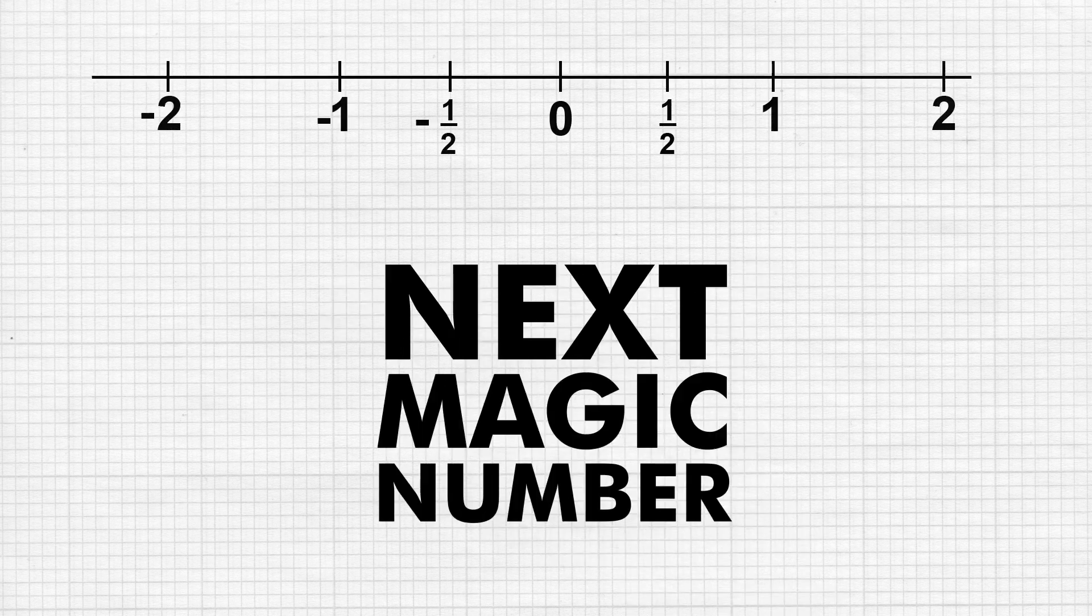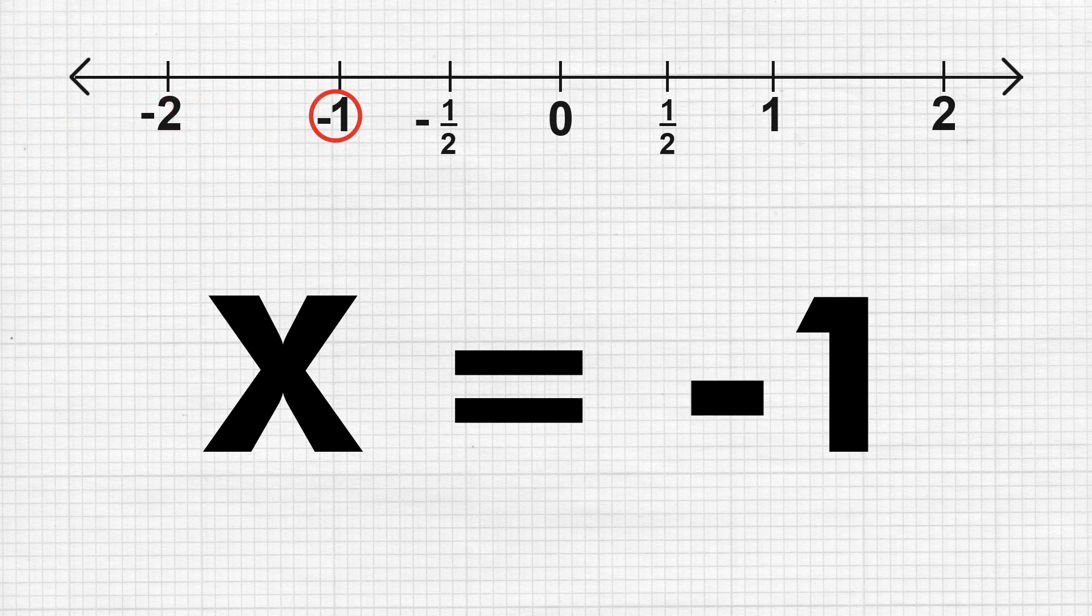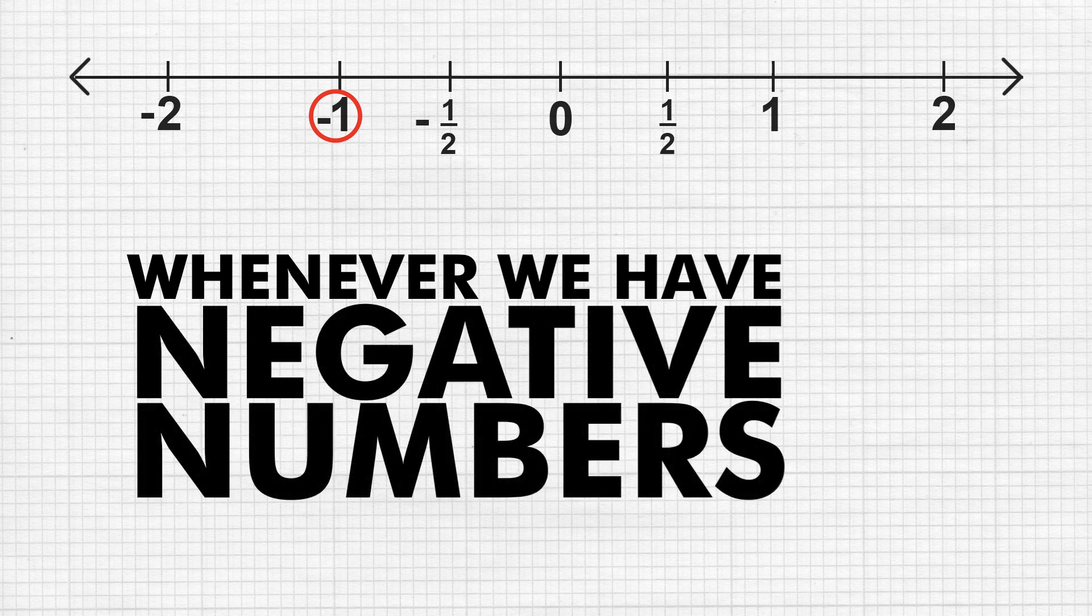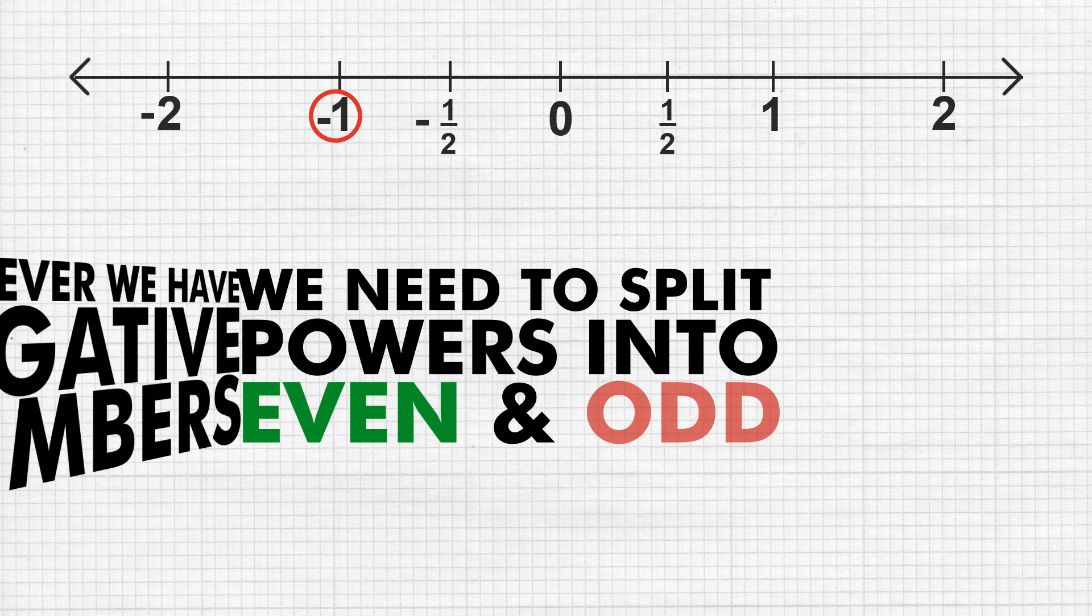Magic 7 numbers. The next magic number we take into account is x equals minus 1. Now remember, whenever we have negative numbers, we need to split the powers into even and odd powers.